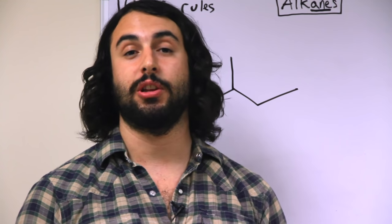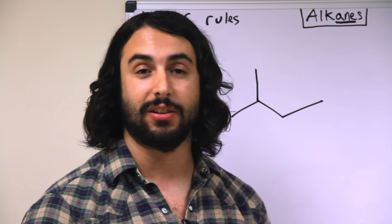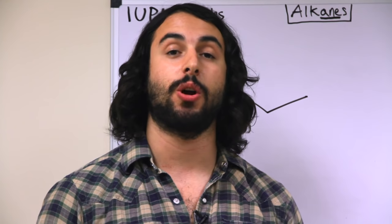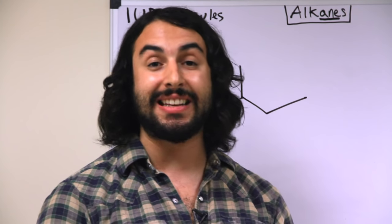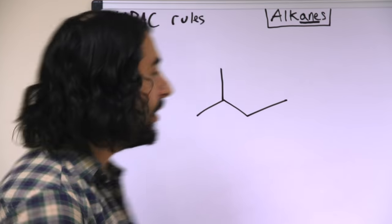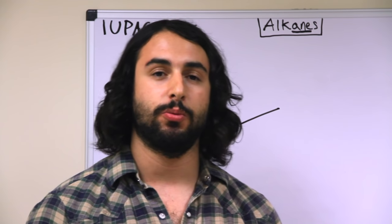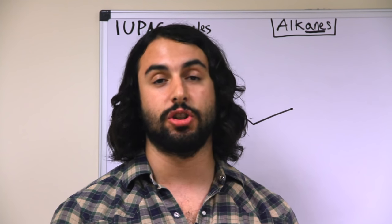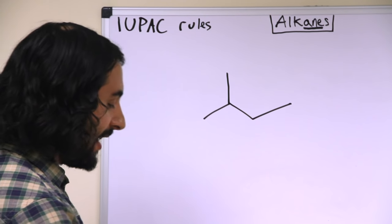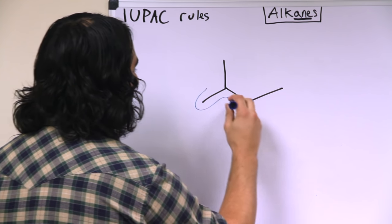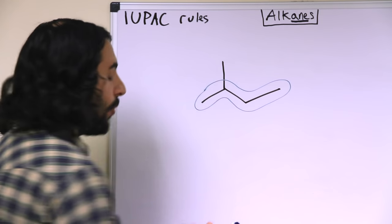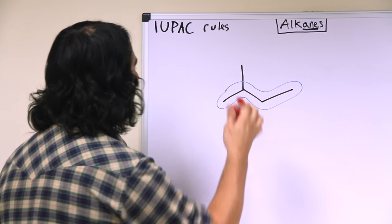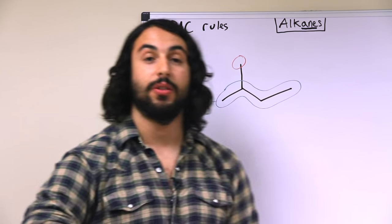So while it would be wonderful if every molecule we had to name were as simple as a straight chain alkane, that's not going to be the case. Molecules have a variety of substituents, which are smaller groups branching off of a main chain. So let's look first at a very easy example of a branched chain alkane. So what we need to do when we are naming a hydrocarbon is we need to identify the longest chain of carbons in the molecule. So right now that's going to be pretty simple. We can see that there is a 4-carbon chain here, and there is a 1-carbon substituent branching from the main chain.